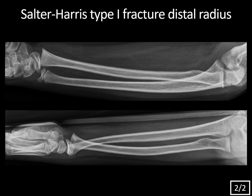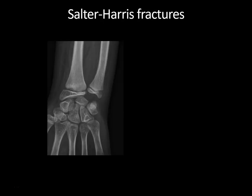Is the type 1 fracture the most common Salter fracture? No, type 2 is by far the most common — that's about 75% of Salter fractures. There's a handy mnemonic for the different types: SALTR. Type 1 is Slip — that's what the S stands for, involving only the growth plate.